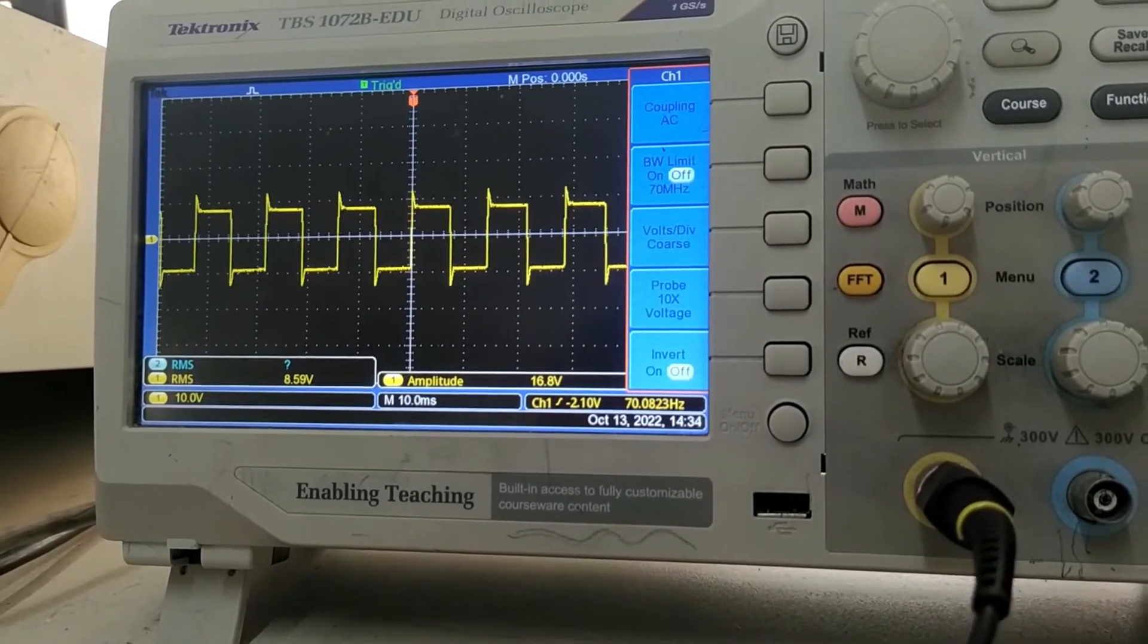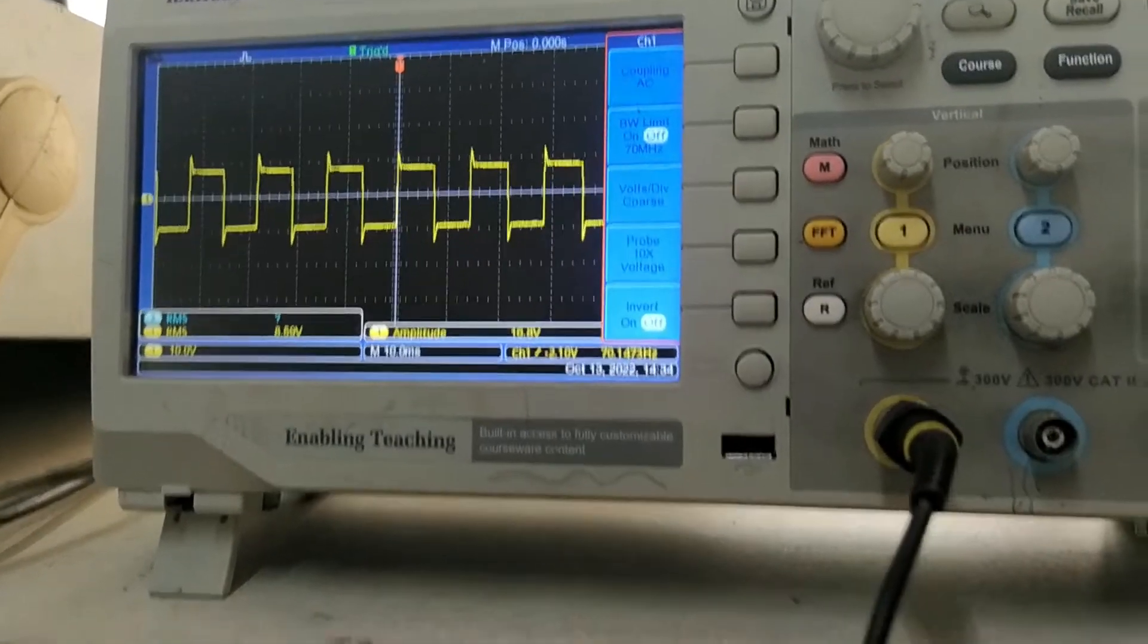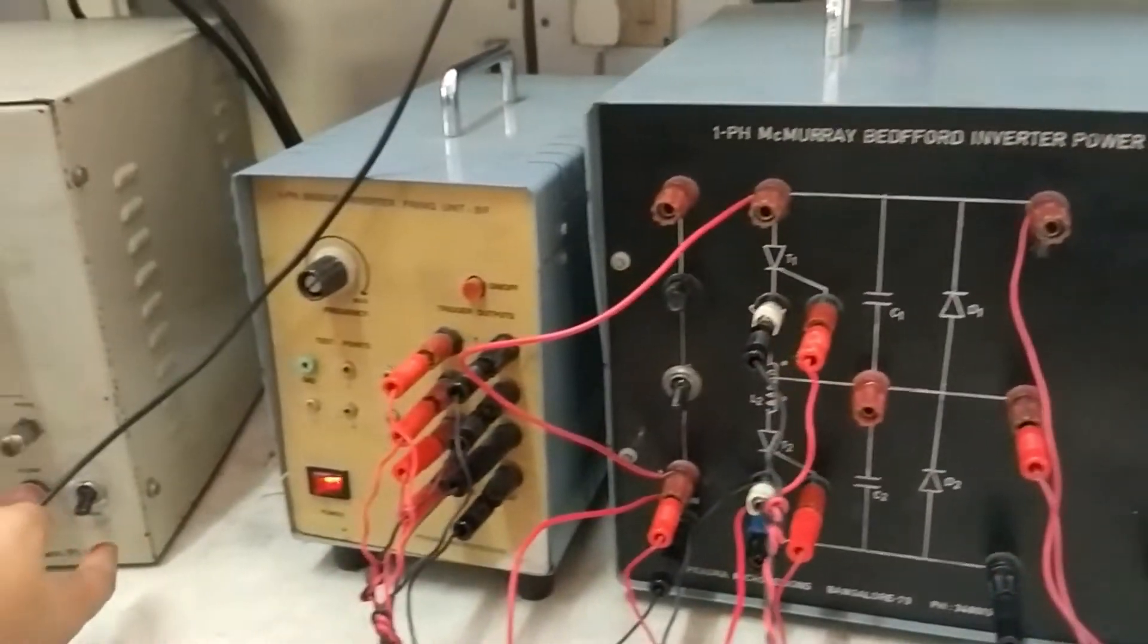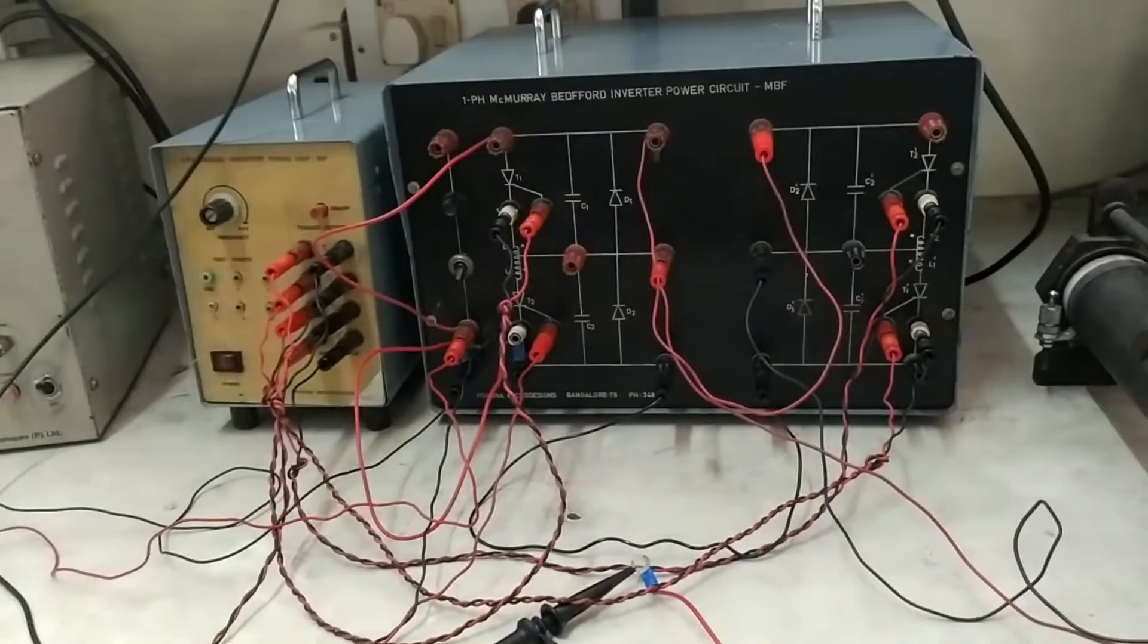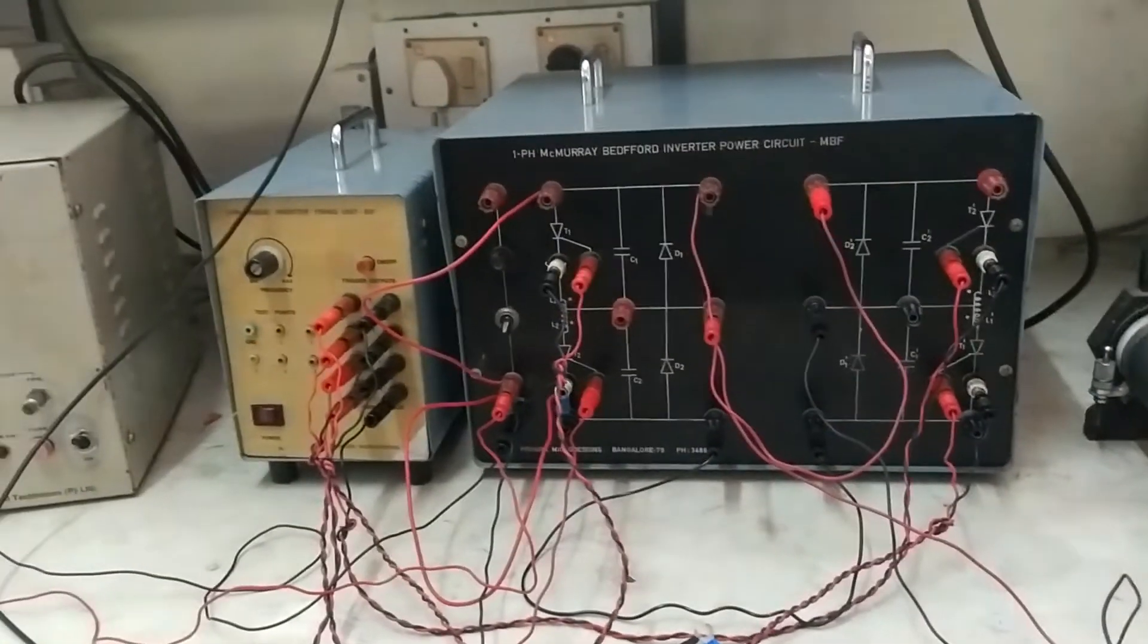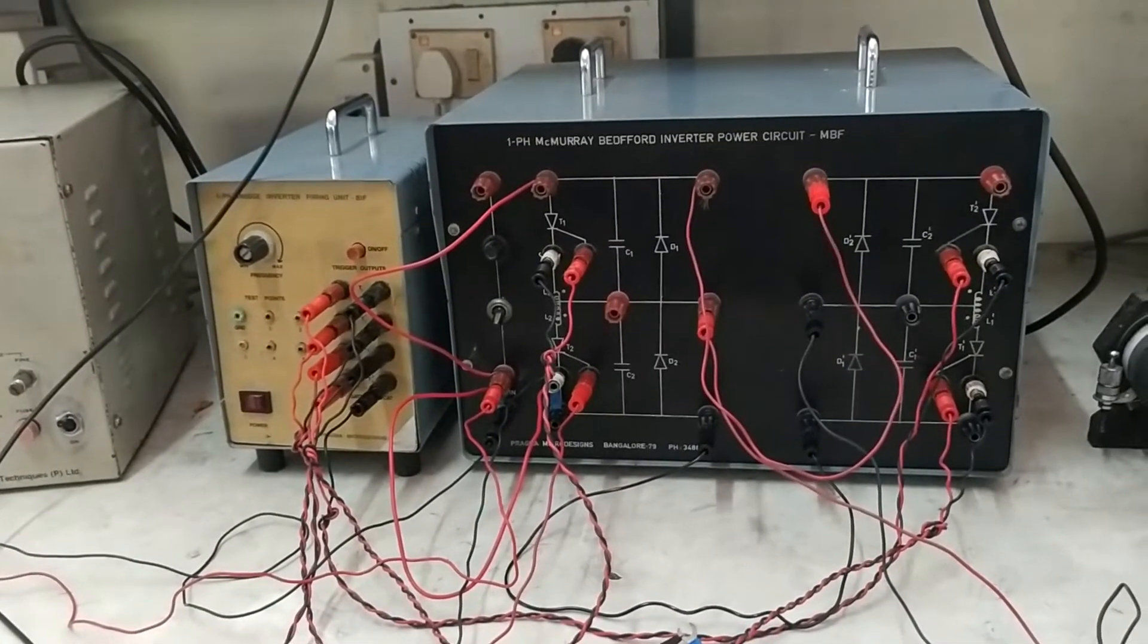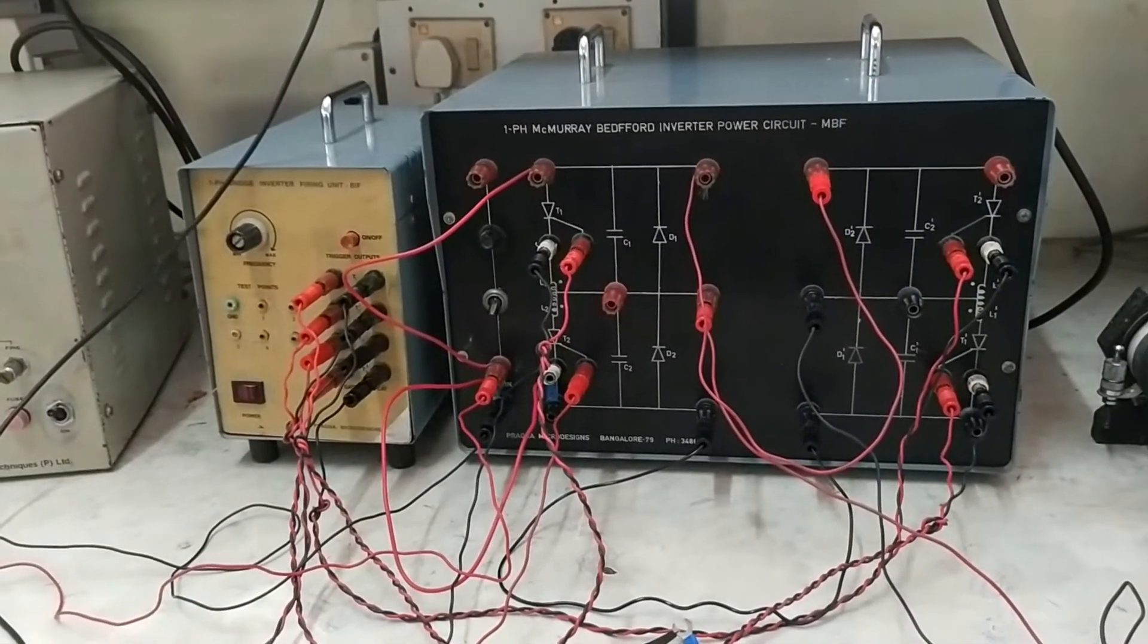After completion of this procedure, switch off the inverter. First the DC supply should be turned off and then the triggers. So this is about single phase McMurray-Bedford inverter. And we got the output across the load and at different points of the circuit. Thank you.